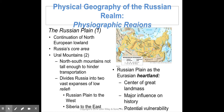The Russian Plain is also where we find the Eurasian Heartland, which is the center of a great landmass and a major influence on history. However, there is potential vulnerability because the mountains are not high enough to hinder transportation, making it easy for enemies to come in.